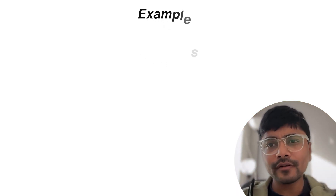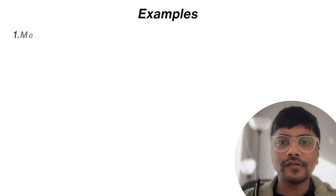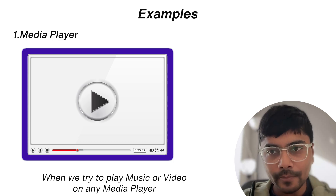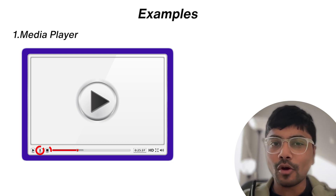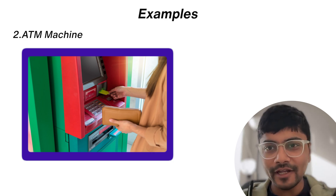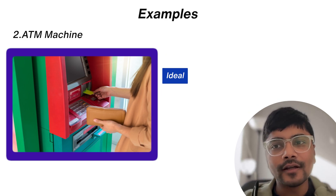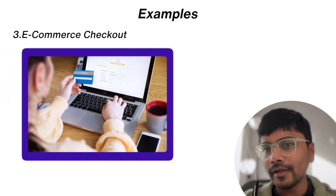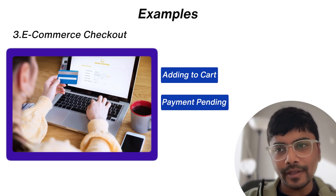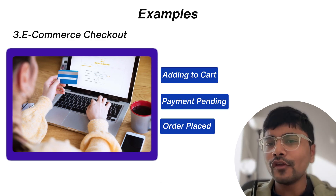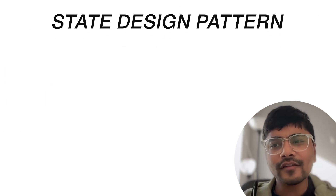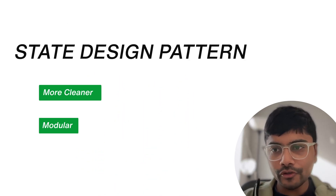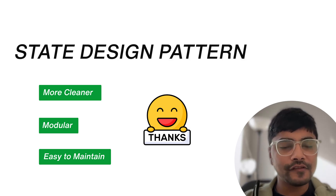Here are a few examples where the state design pattern shines. First, a media player — it has states like play, pause, stop, etc. Second, an ATM machine — very similar to our vending machine, with states like idle, card inserted, dispensing cash. Third, e-commerce checkout — with states like adding to cart, payment pending, order placed. That's the state design pattern: it's like giving your code multiple personalities, each with its own set of rules — making your code clean, modular, and easy to maintain. Thanks for watching and I'll see you in the next video.